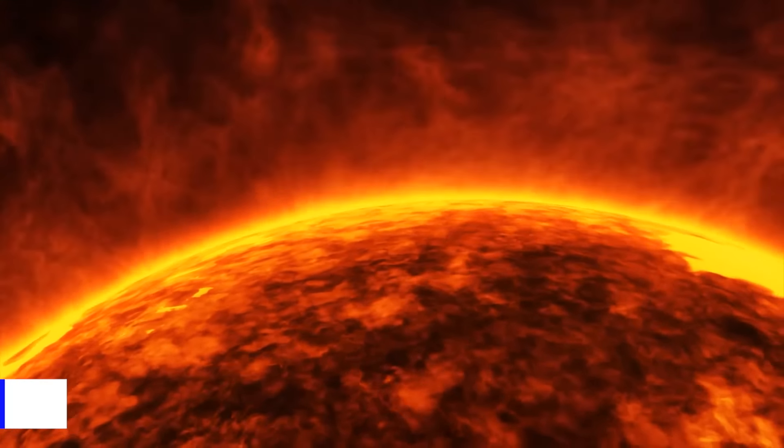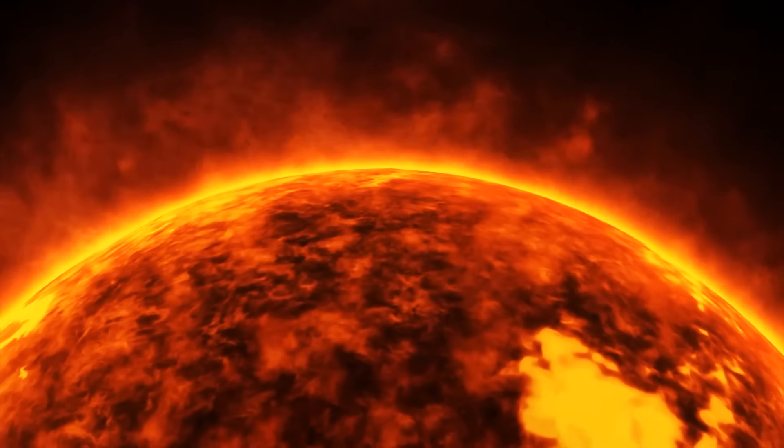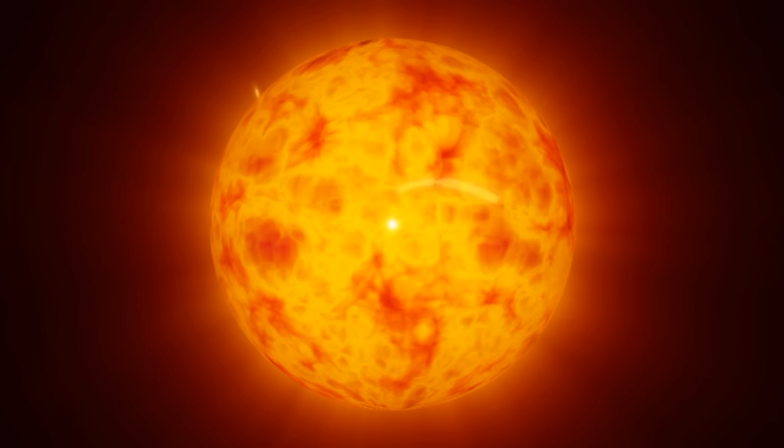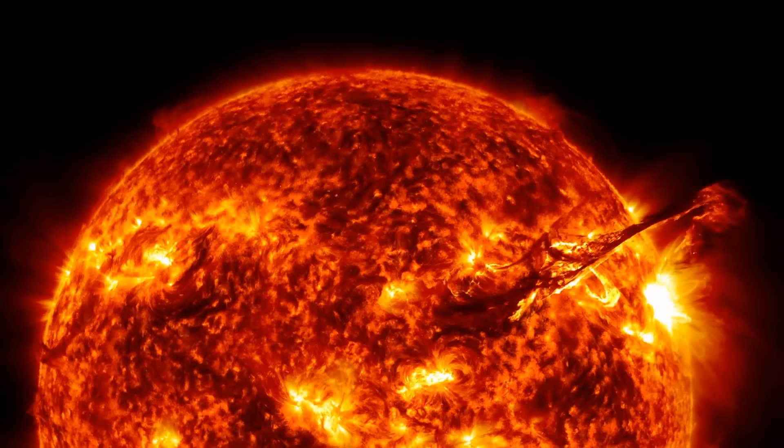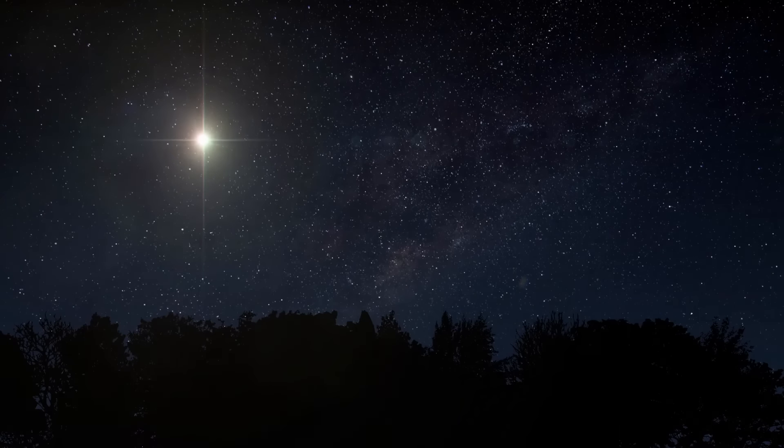Betelgeuse, characterized by its distinctive red hue, is a red supergiant star located in the Orion constellation. It is one of the most imposing stars visible to the naked eye, with a diameter about 900 times that of our Sun. This extraordinary size and its relative proximity to Earth make it a prominent presence in our night sky.